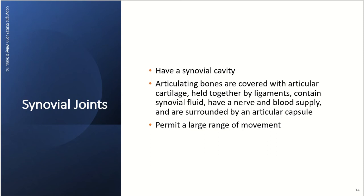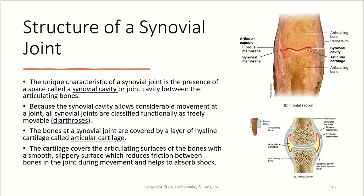Our next type is synovial joints — the really obvious joints people think of. These have a synovial cavity. The articulating bones are covered with articular cartilage and held together by ligaments. The joint also contains a synovial cavity, blood and nerve supply, and is surrounded by an articular capsule. One unique characteristic is the presence of a space called the synovial cavity — found between the two articulating bones — also called a joint cavity.